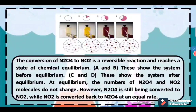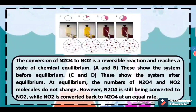At equilibrium, the numbers of N2O4 and NO2 molecules do not change. However, N2O4 is still being converted to NO2, while NO2 is converted back to N2O4 at an equal rate.